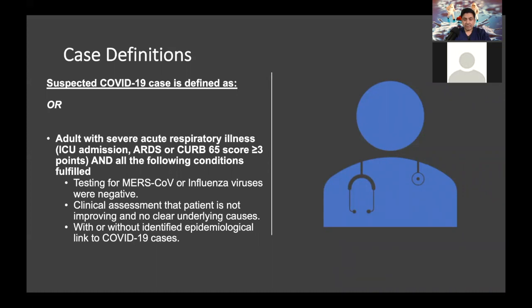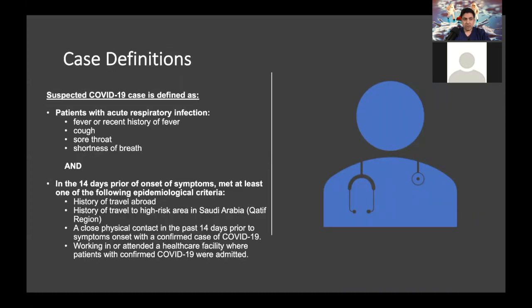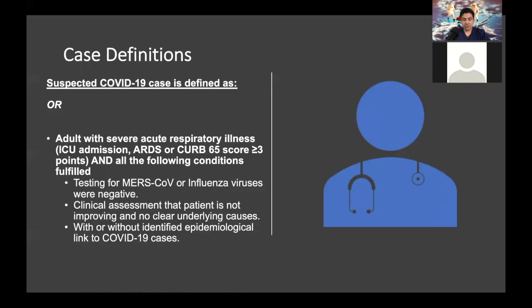The second definition is most important for inpatient services: if you have an adult with severe acute respiratory illness, ICU admission, ARDS, or CURB-65 score greater than or equal to three points, and you did not find a reason for that illness, you have to think about COVID-19. If the influenza test is negative and the clinical assessment is not improving with no clear underlying cause, you should screen that patient for COVID-19 with or without an identified epidemiological link.